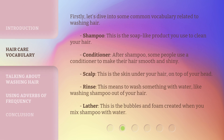Firstly, let's dive into some common vocabulary related to washing hair. Shampoo — this is the soap-like product you use to clean your hair. Conditioner — after shampoo, some people use a conditioner to make their hair smooth and shiny.